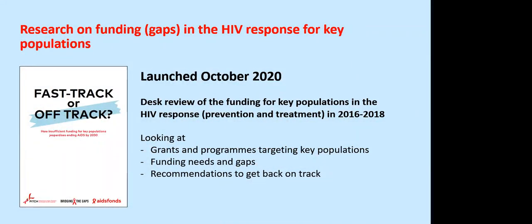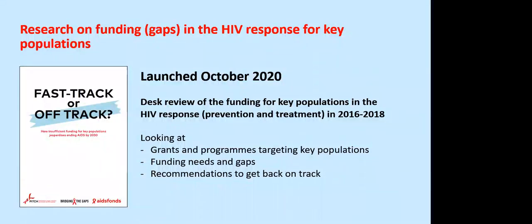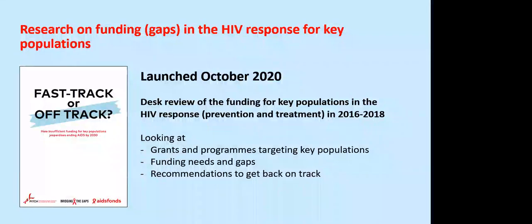AIDS Funds commissioned a study to look at the funding for key populations within the HIV response in the first three years of the fast track strategy, 2016 to 2018 — one of the most comprehensive mappings to date. It looked at funding for HIV programming at global, regional, and national levels, including domestic expenditures and investments by all major donors. While comprehensive, it doesn't represent the full picture because of a lack of available data, lack of transparency, and inconsistency in recording. Funding is not always disaggregated for key populations.